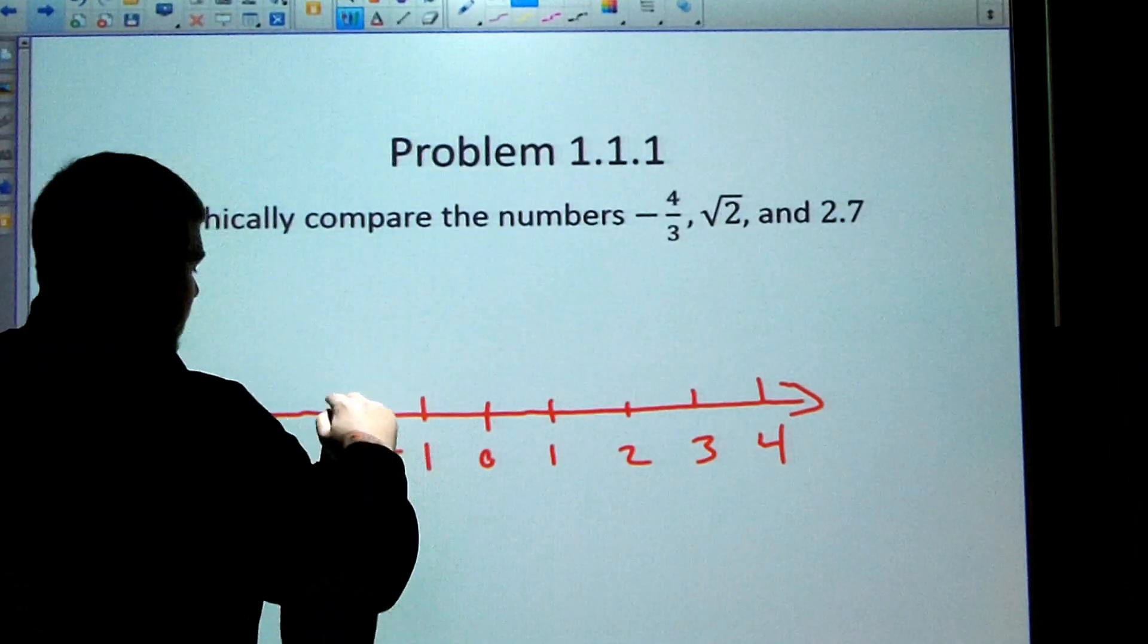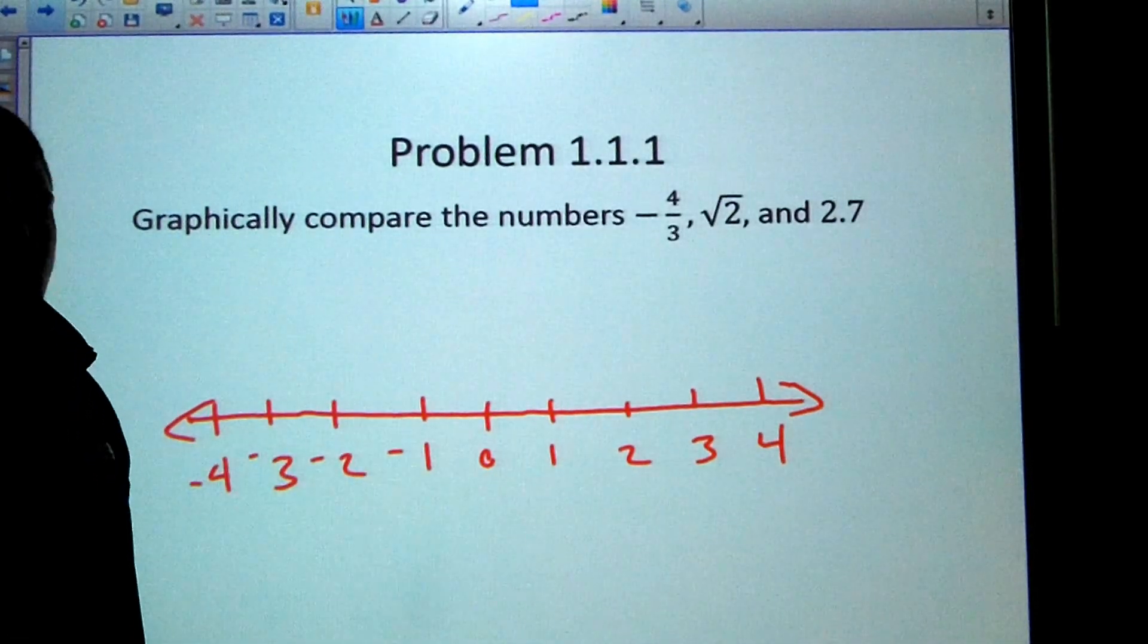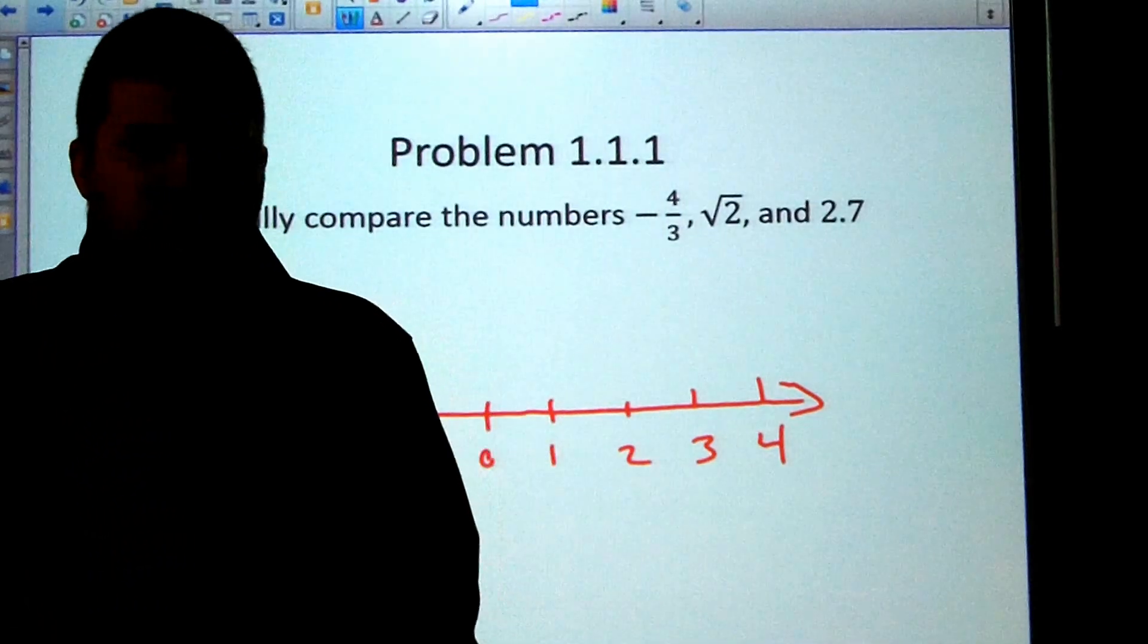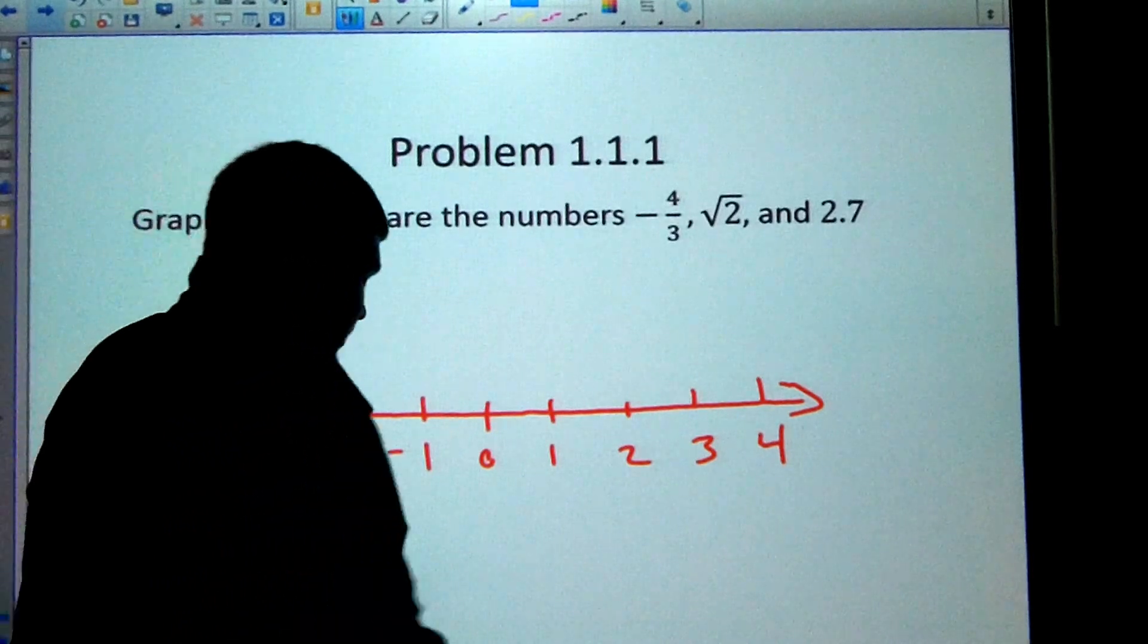and then negative one, negative two, negative three, negative four. Now perhaps the easiest way to do this type of problem is to convert each one of these into a decimal. So I'm going to grab a calculator and do that.